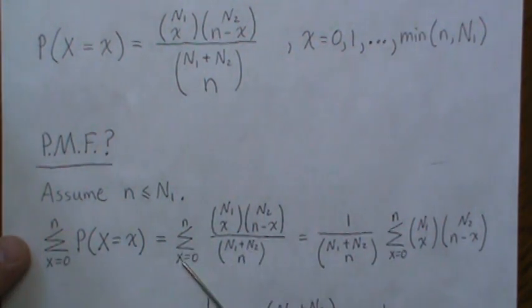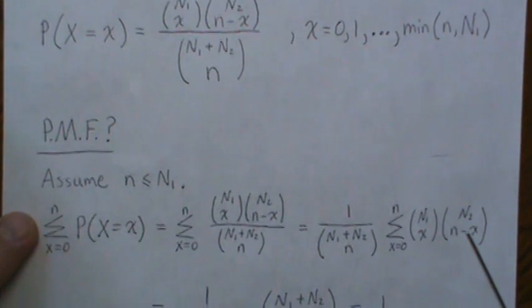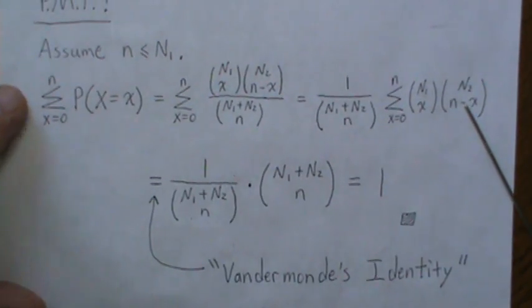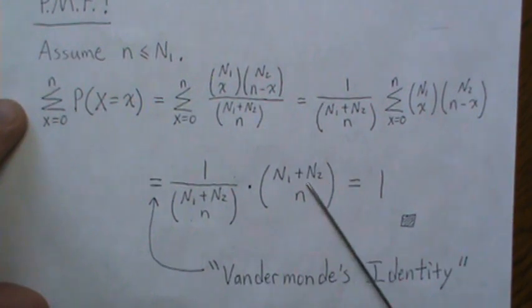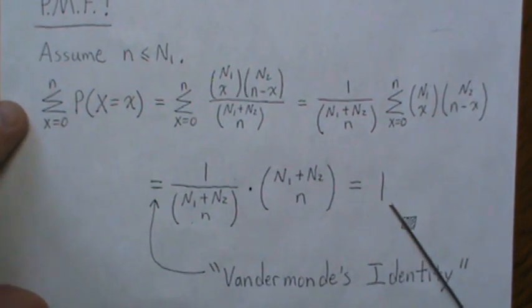The denominator has no x's, so it can come outside the sum, and that's what we do. And then this quantity here, there's an identity called Vandermonde's identity, where this sum is equal to this. And then those cancel, and it equals 1.